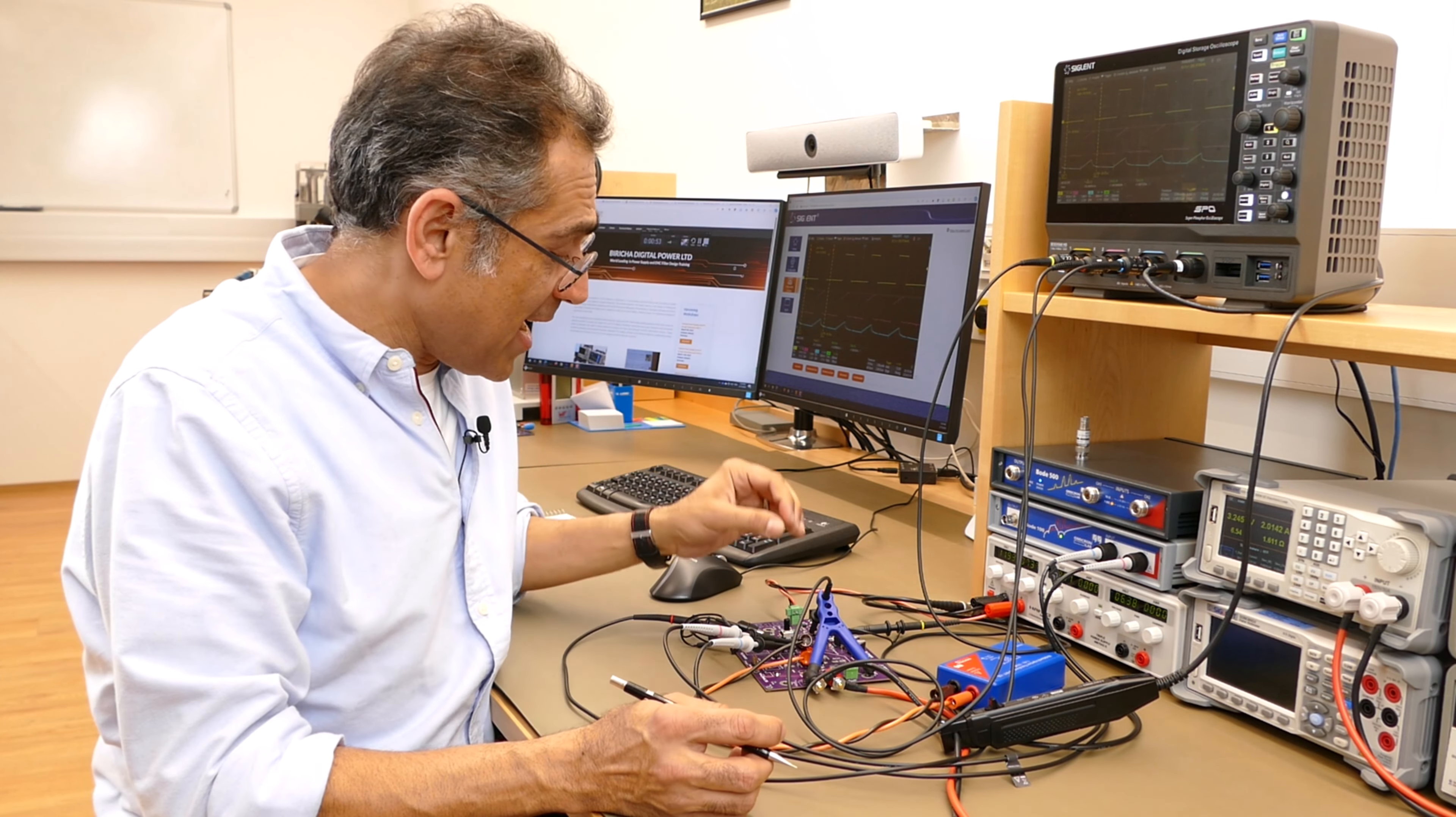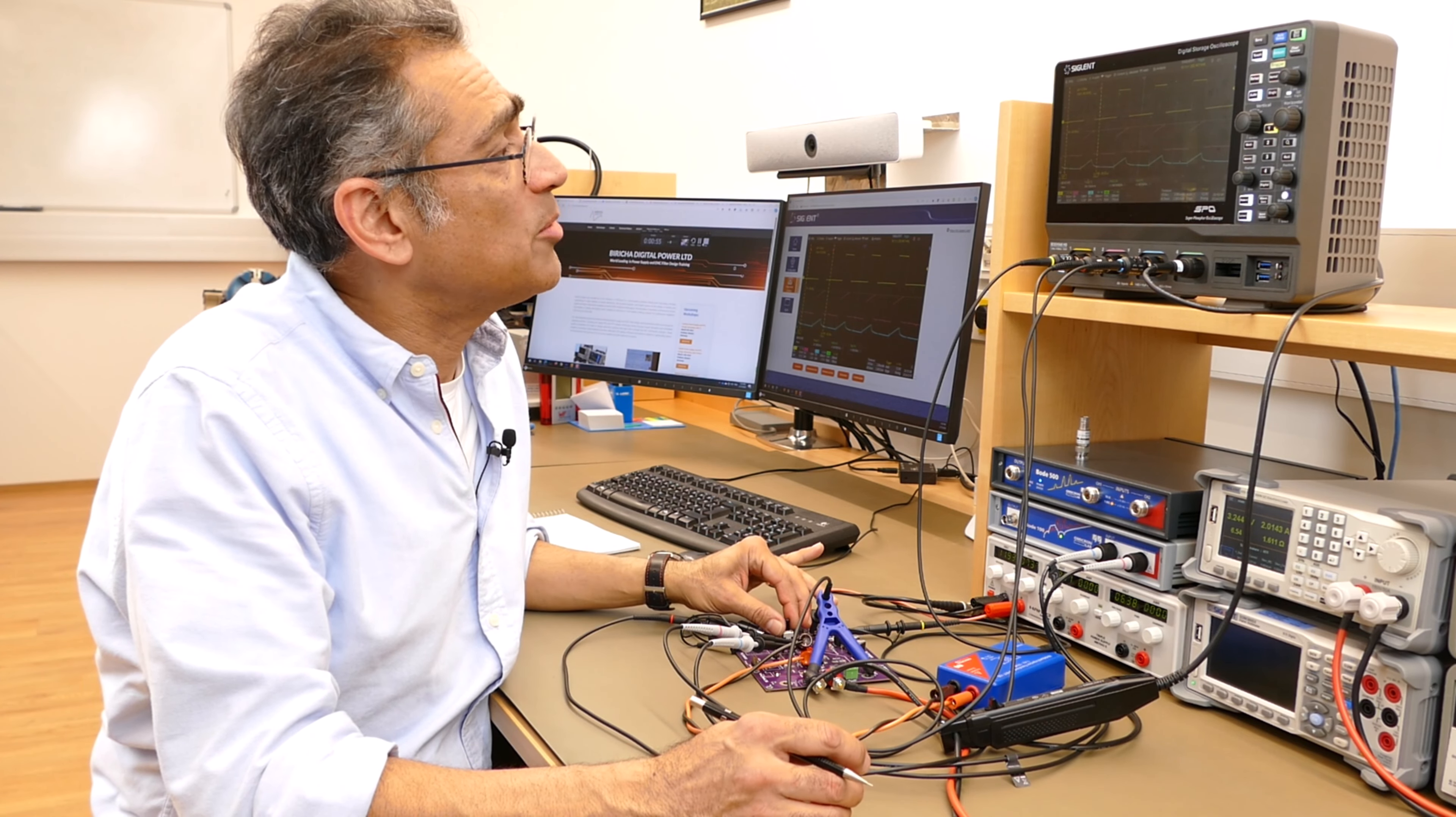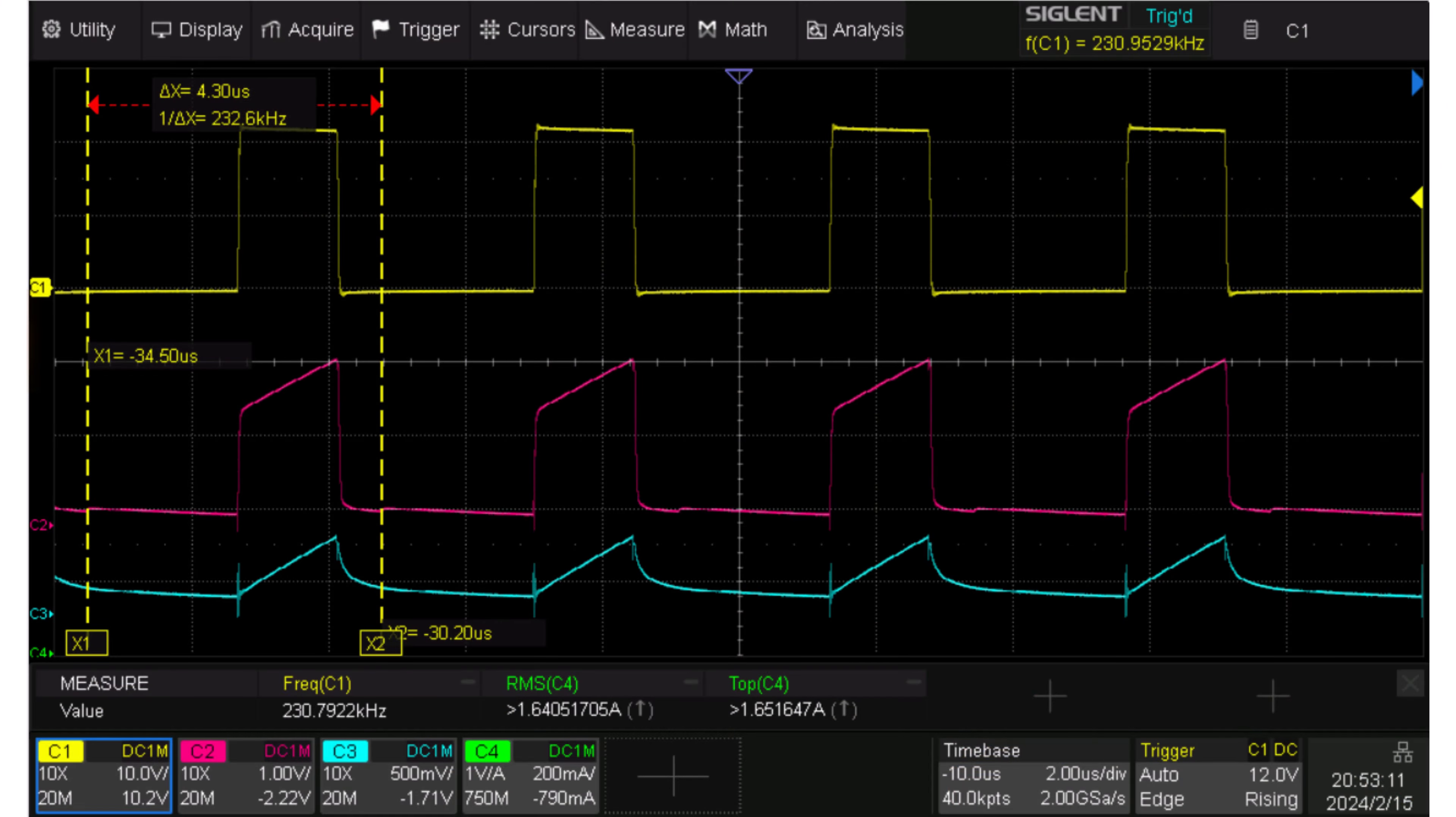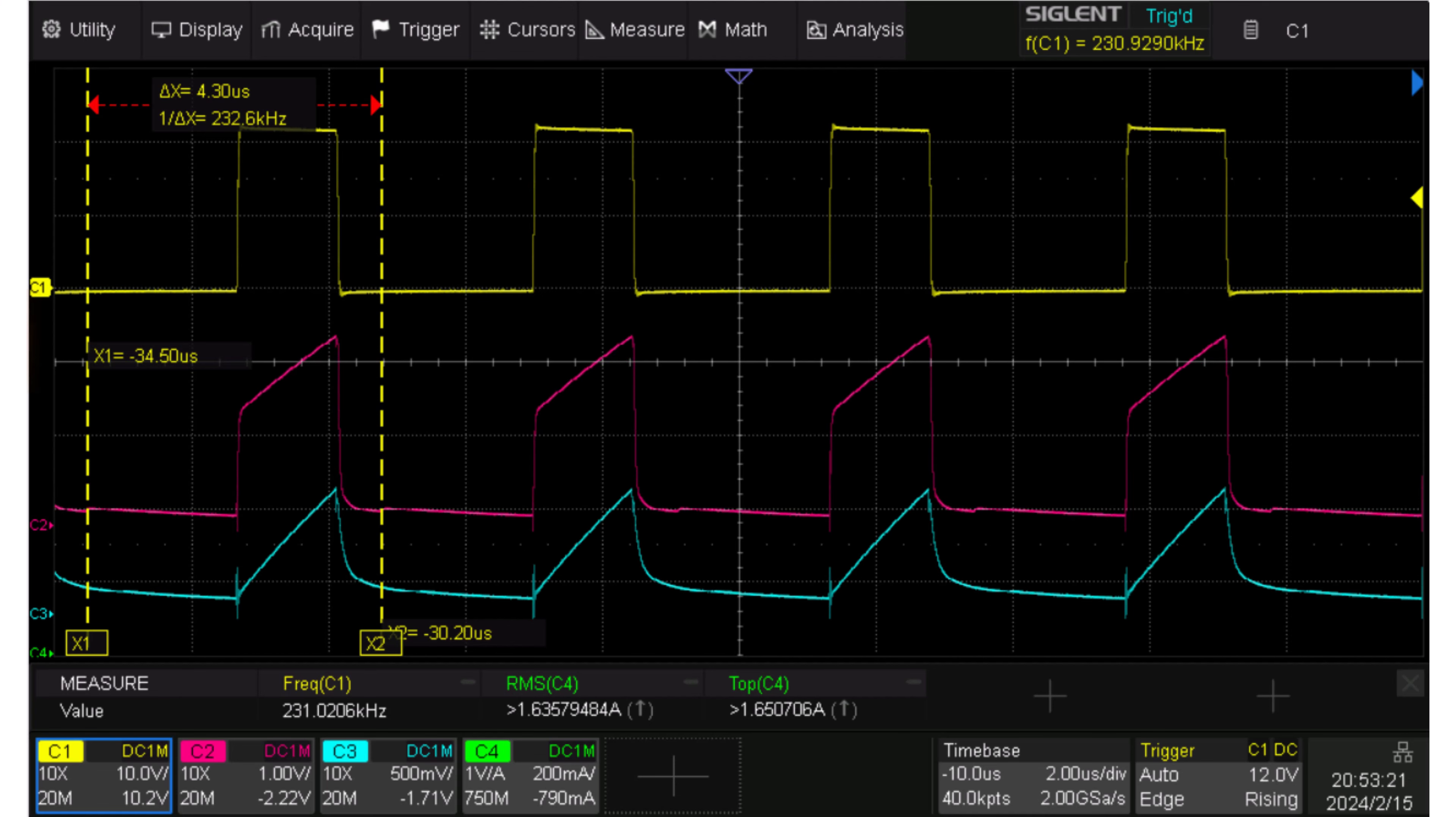But for now, what I can do, if you look at the blue trace and the pink trace, I can add or increase or decrease the amount of ramp that I add to my current sense. You can see that the blue trace is the amount of ramp that I'm adding. And as I increase the amount, the total peak of the current sense goes up, that's the pink trace, and I can reduce it.